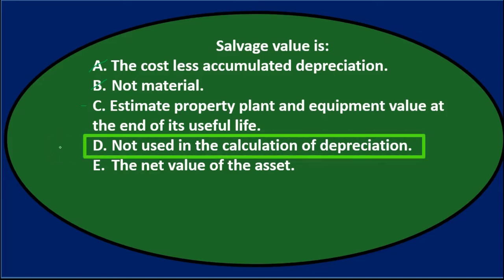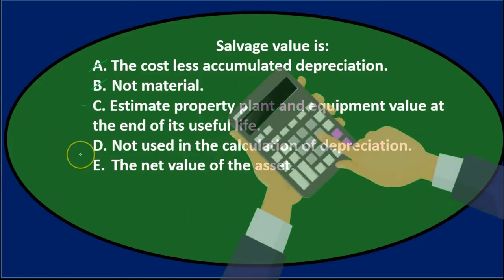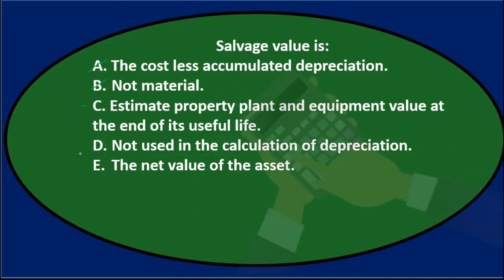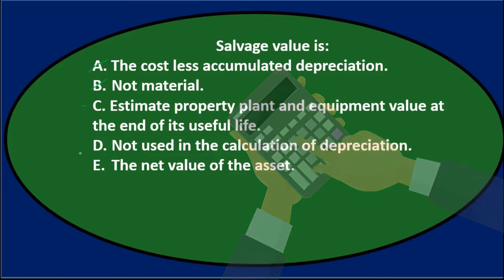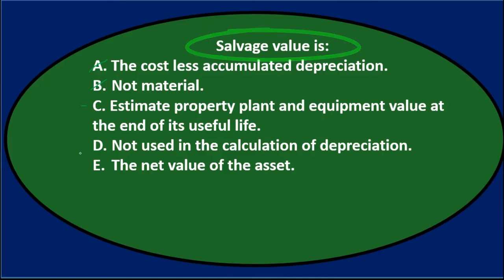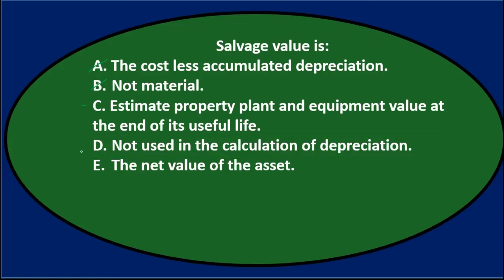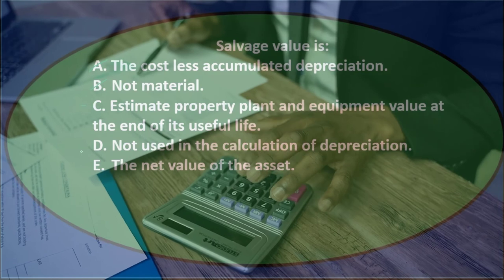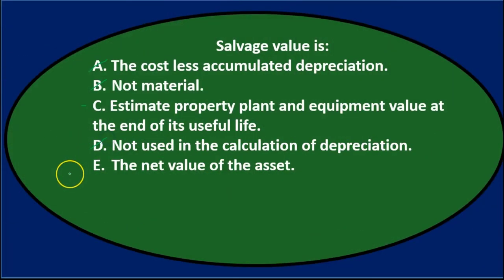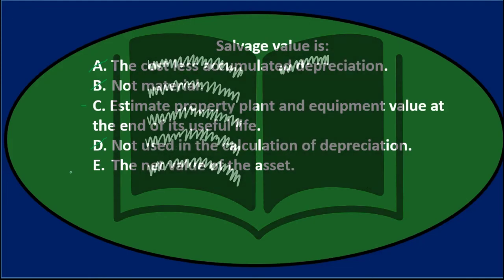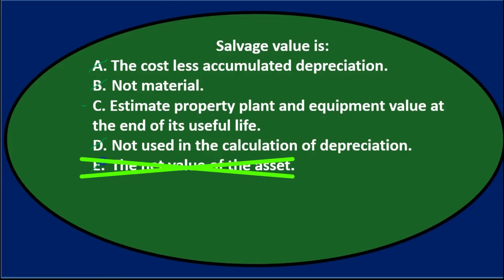D says not used in the calculation of depreciation, but typically it is used. In the straight-line method, we take cost minus salvage value. In double declining balance, an adjustment is made in the final year to account for salvage value. So it's not D. E says the net value of the asset, which would be the same as book value — cost minus accumulated depreciation — so that's not salvage value either unless it's at the end of the asset's life.